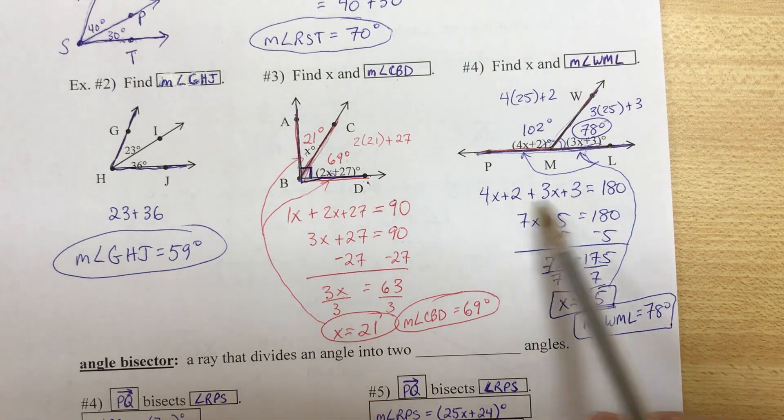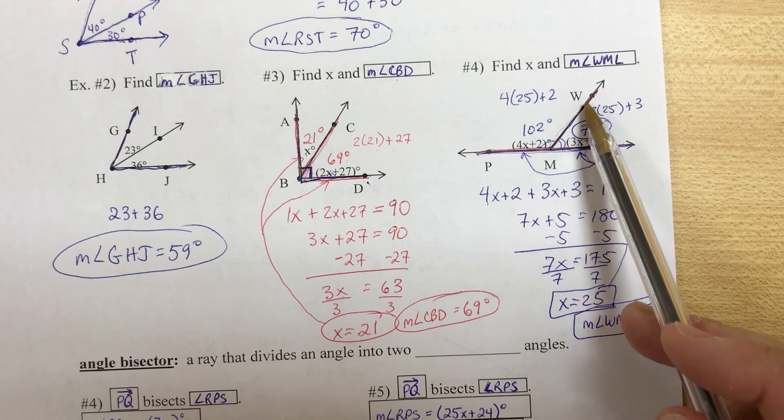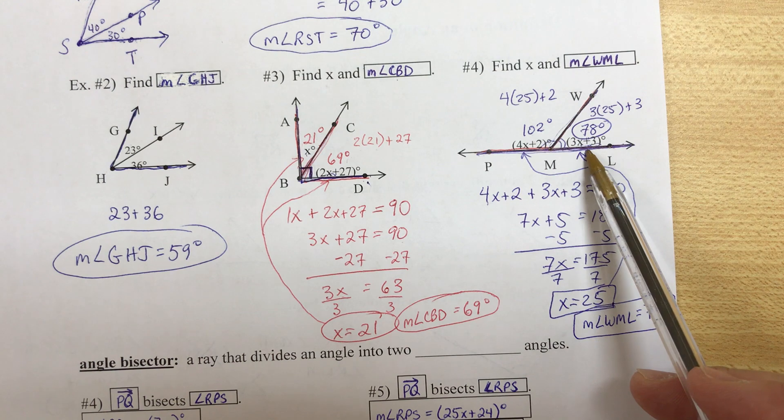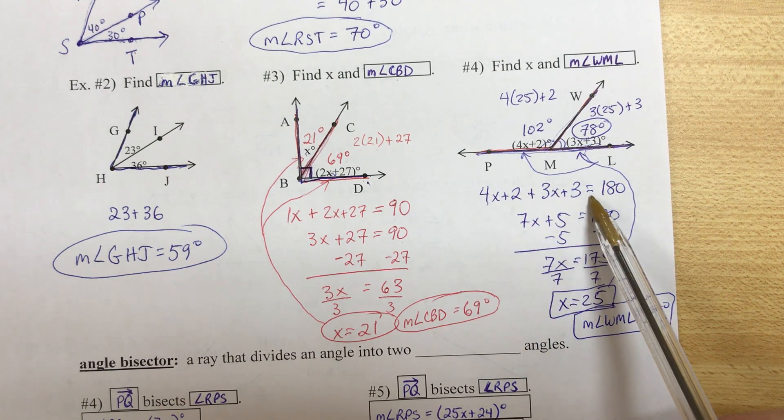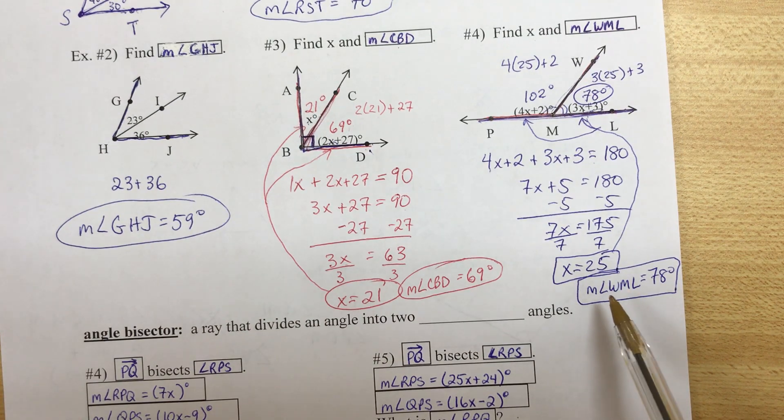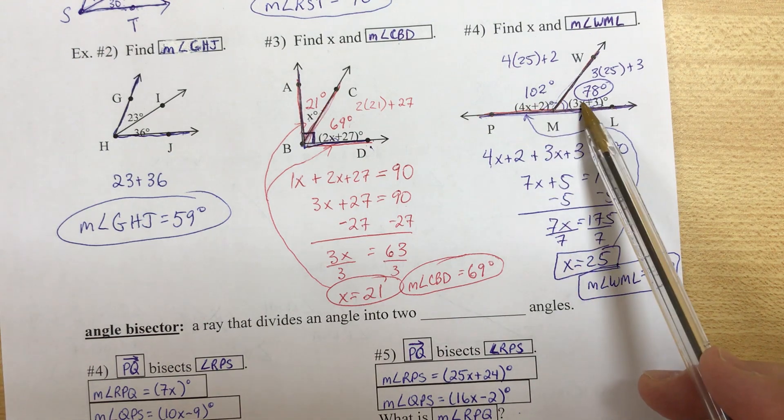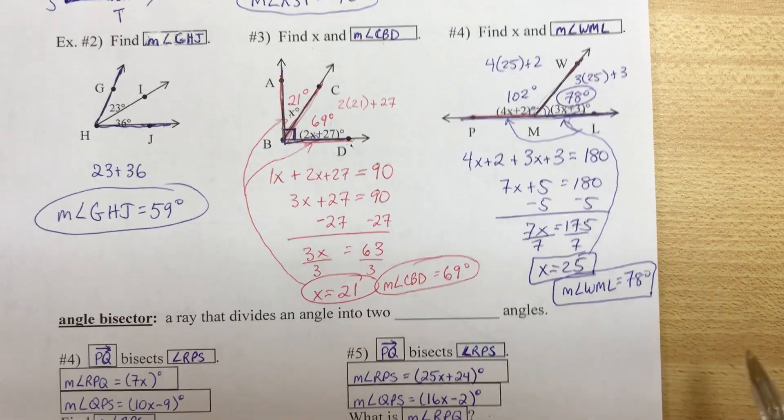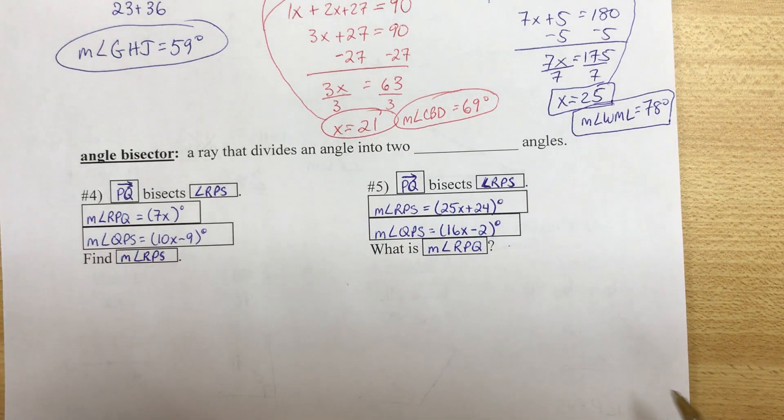In algebra, they give you the equation and they say solve it. In geometry, they give you the picture or the information. You have to make the equation. You have to see the relationship, then solve it. That's the challenge. So the algebra is still important, but you have to first know the relationship. So that's a higher level of thinking. Okay, we've got two more problems we're going to do, and one more definition.